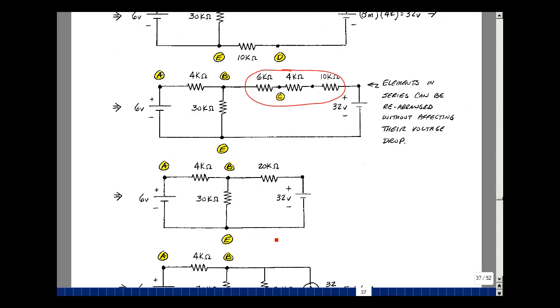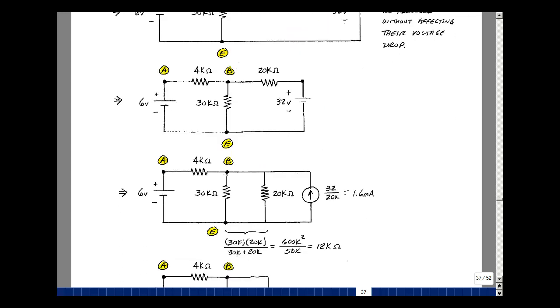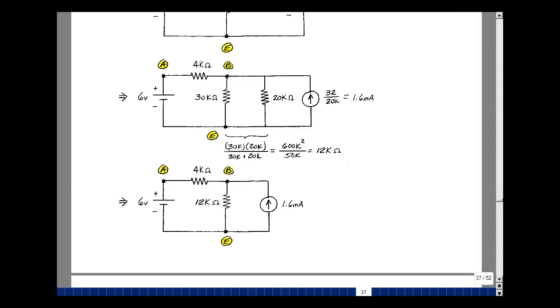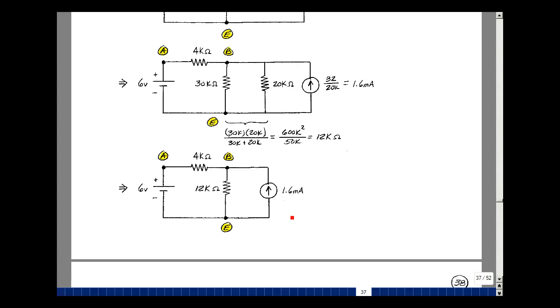Convert this into a current source parallel with the resistance. The arrowhead points where the plus sign was. Current source is going to be 32 volts divided by 20k. That'll be 1.6 milliamps in parallel with 20k. Now I have these two resistors in parallel. I can combine them, take the product over the sum, and that turns out to be 12k. I can replace that with the 12k resistor in parallel with the 1.6 milliamps.